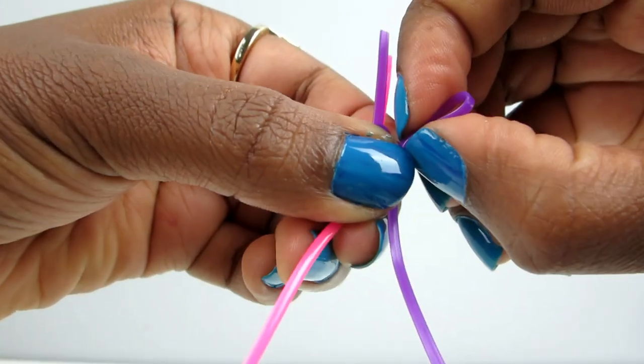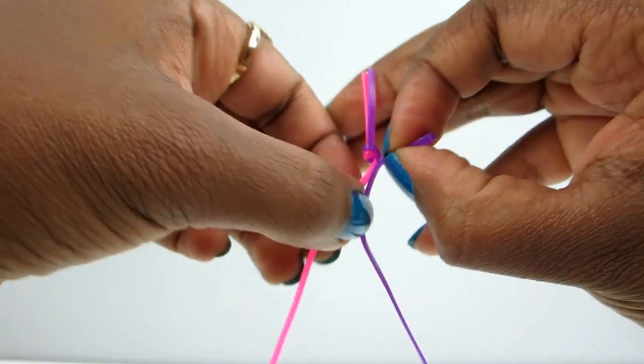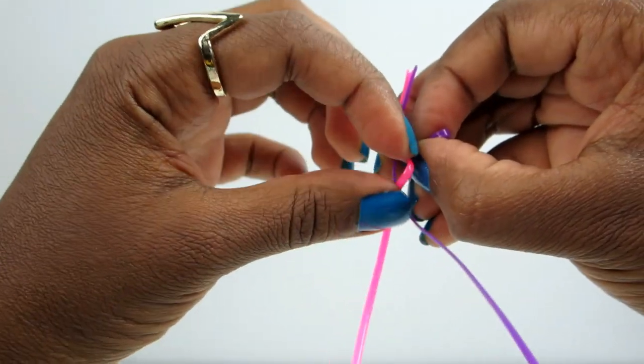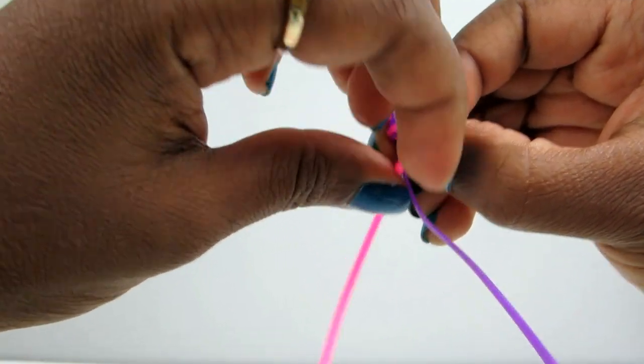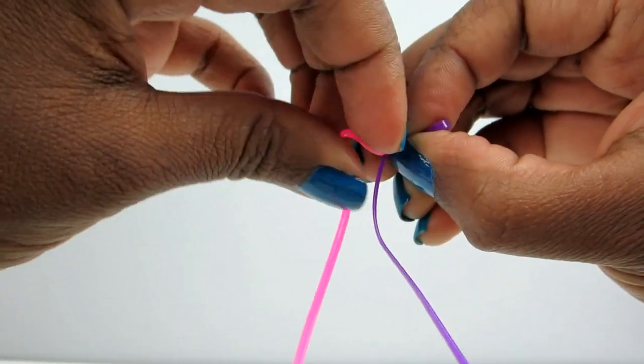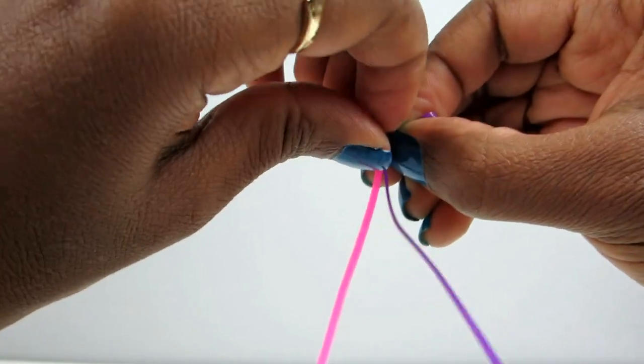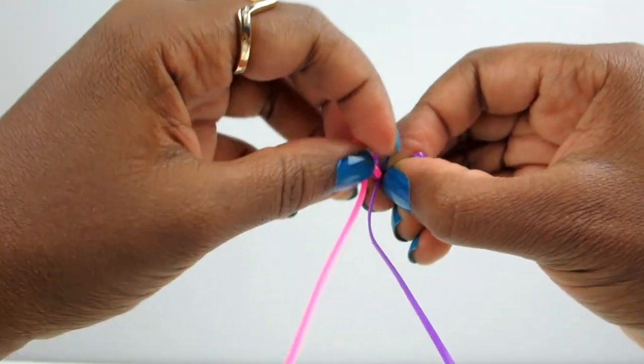So I just now keep that held down with my right hand, well, fingers. And I'm going to get the pink side here and make a little rabbit hole, or rabbit ears. I don't know why I keep on saying rabbit hole.